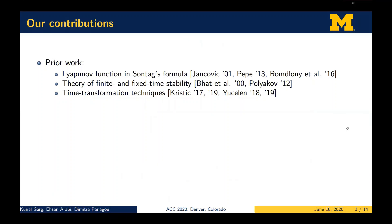Prior work includes using Sontag-like formulas to guarantee exponential or asymptotic convergence to an equilibrium point or set, depending upon the assumptions on the problem. In the early 2000s, the theory of finite and fixed time stability was introduced so that convergence can be guaranteed within a finite or fixed amount of time. More recently, time transformation techniques have been developed so that finite and fixed time stability can be guaranteed in a user-defined prescribed time. I'll present all the technical details as we move on.